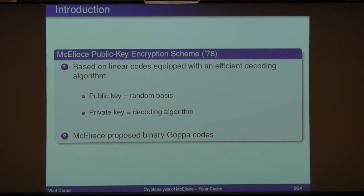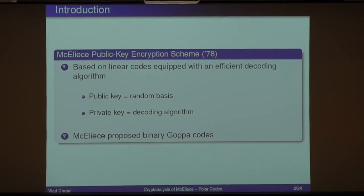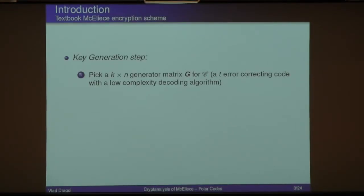At the base of the cryptosystem we have two facts. A public key has to be a random linear code, or a random basis for a linear code, and the private key is the set of parameters for the decoding algorithm. The original cryptosystem proposed by McEliece used binary Goppa codes. After that, there were many variants using many codes, and today we focus on polar codes. The key generation step: we generate a matrix for the code, and the code has to decode T errors with a low-complexity algorithm.